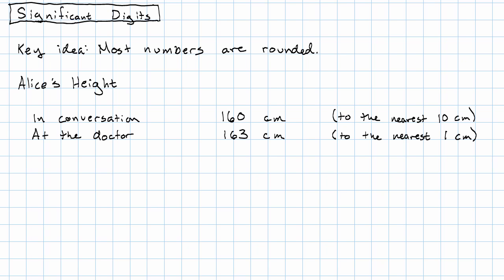That doesn't mean that she was lying to her friends. If you take that 163 centimeters and round it to the nearest 10, then you get the 160 centimeters she told her friends. She's just being more precise, more specific.